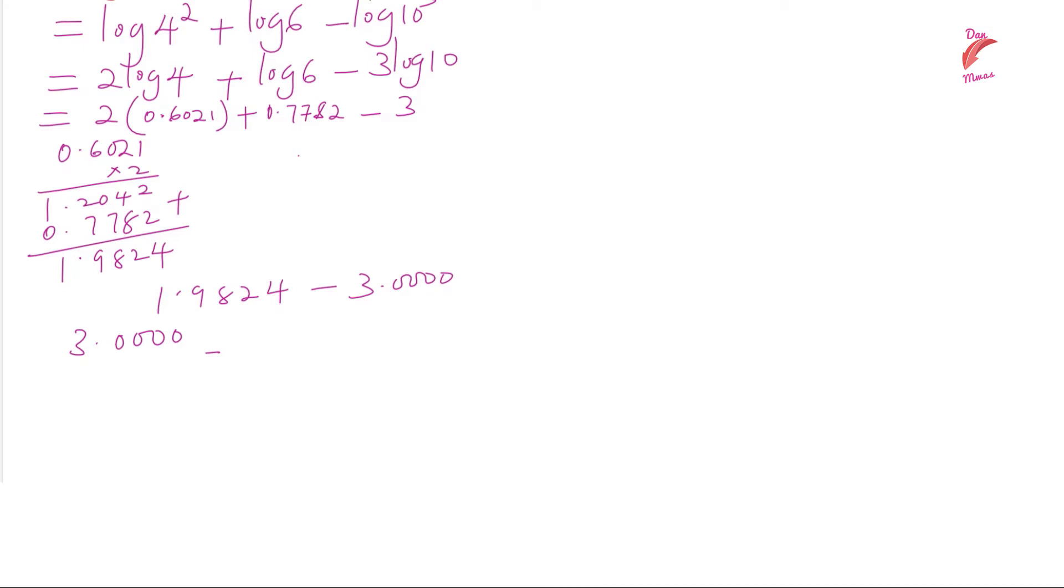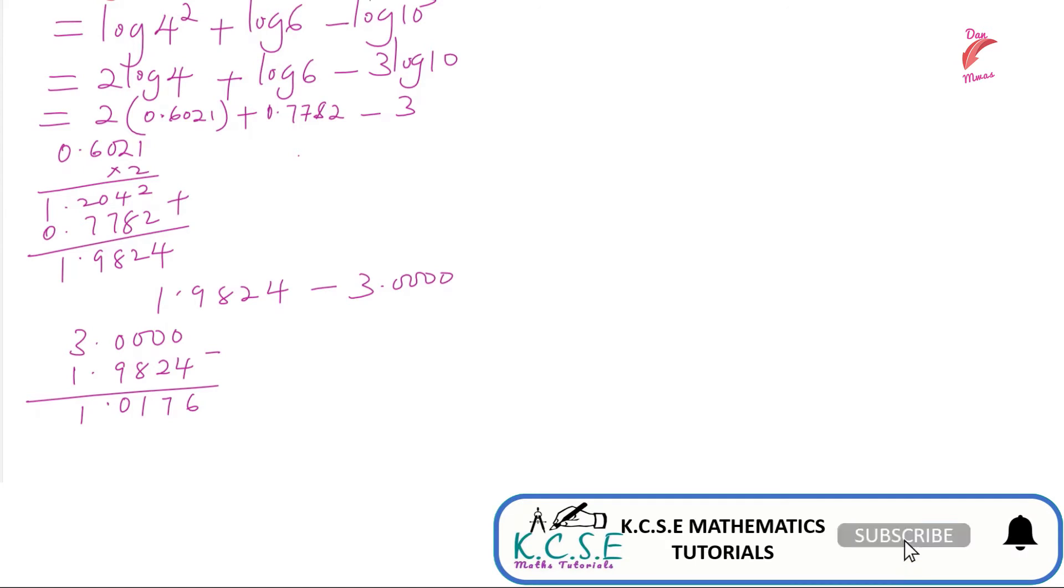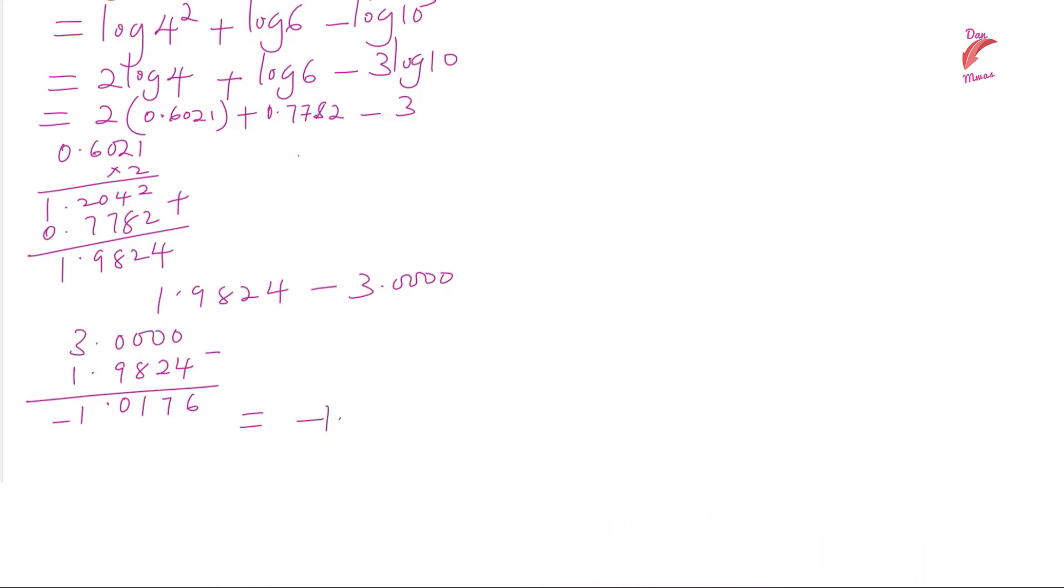Remember the answer you're going to get here is negative. This will be 1.0176. Since we are subtracting a bigger number from a smaller number, the answer will be negative. So the first solution is negative 1.0176.